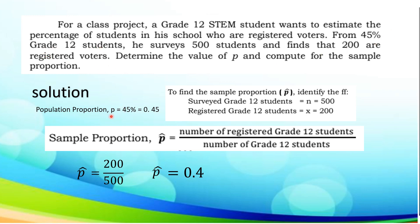On the given statement, it is being mentioned that 45% of grade 12 students. Here we are referring to the population of 45%, so in decimal that is 0.45. To find the sample proportion, let us identify the following: the surveyed grade 12 students is 500, the registered grade 12 students is 200. To use the formula we have p-hat equals the number of registered grade 12 over the number of grade 12 students, which is x over n. 200 divided by 500 is 0.4, which is our sample proportion.